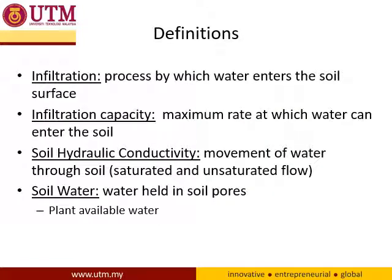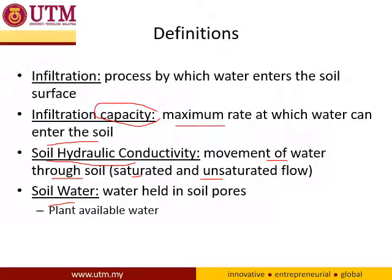There are several definitions to know. Infiltration is the process by which water enters the soil surface. Infiltration capacity is the maximum rate at which water can enter the soil — there is a limit; at some point, water cannot infiltrate anymore into the soil, which is when the soil reaches maximum saturation. Soil hydraulic conductivity is the movement of water through soil, including both saturated and unsaturated flow. Soil water is water held in soil pores, available for plants.